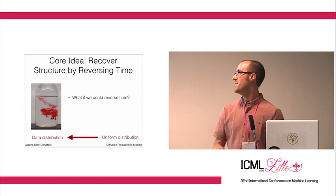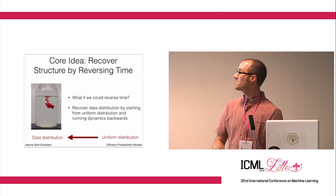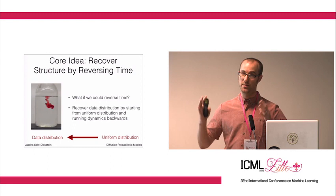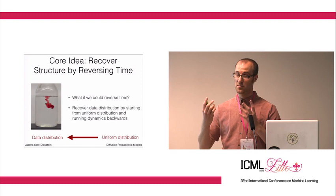You would be able to have a generative model of your data which involves starting from some uninformative distribution and running this process which destroys all the structure backwards until you get your data distribution.